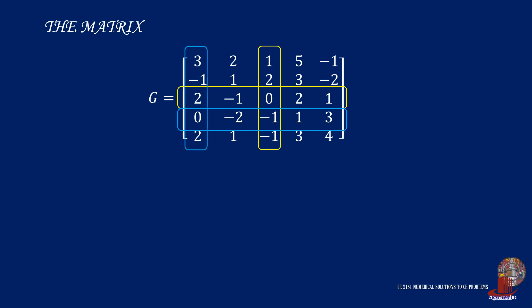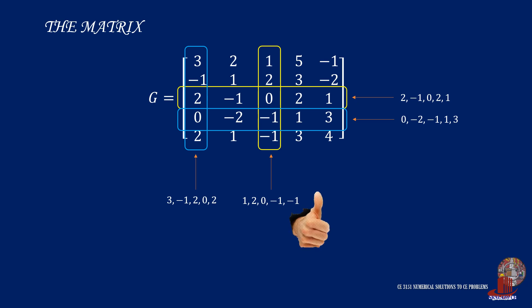With four options, we study the scalars. The third row has 2, negative 1, 0, 2, and 1. The elements in the third column are 1, 2, 0, negative 1, and another negative 1. Those from the fourth row are 0, negative 2, negative 1, 1, and 3. Then the first column has elements 3, negative 1, 2, 0, and 2. The simplest set of scalars is found at the third column, and let's use just that.